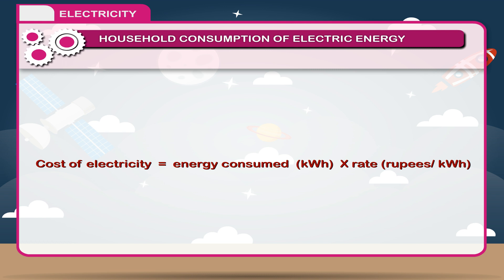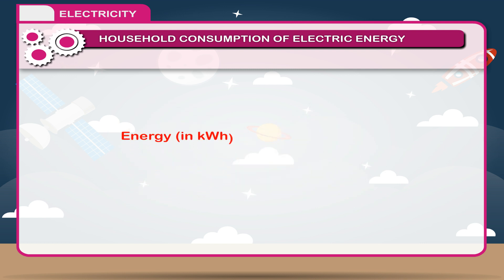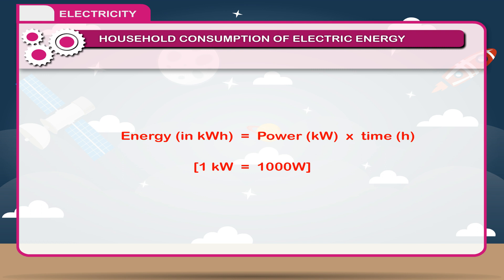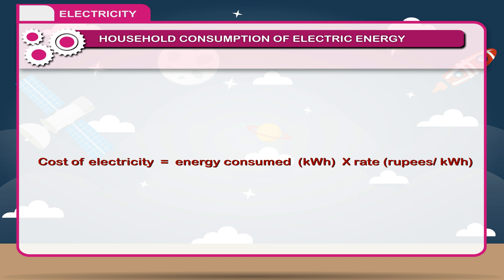The electric energy is sold in units of kilowatt-hour (kWh). It is the unit in which the consumer pays the cost of electric energy consumed. The total energy consumed by an electric appliance in kilowatt-hours can be calculated by multiplying its power rating with the time duration for which it was used. The cost of electricity is then the product of energy consumed in kWh with the rate in rupees per kWh.